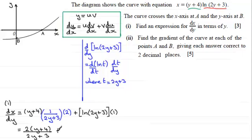2y plus 3. And then plus, and then we've got the next terms multiplied by 1. So we don't need the square brackets anymore. We can just write that as the natural log of 2y plus 3. And there you go. There's dx dy.